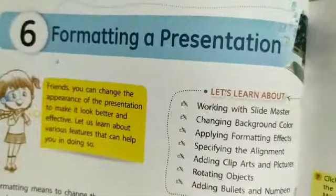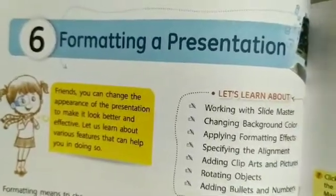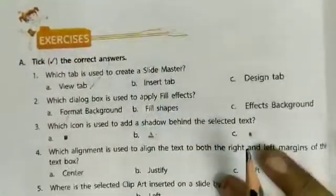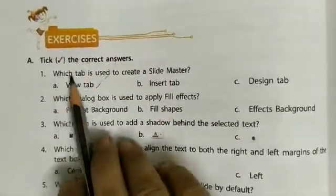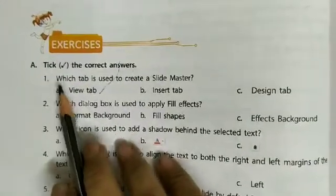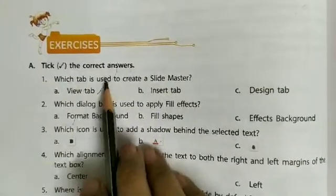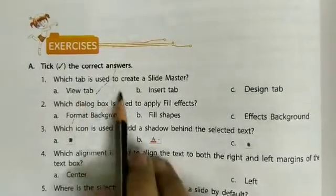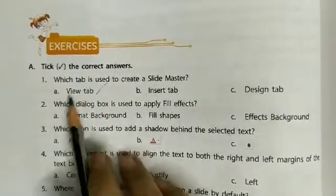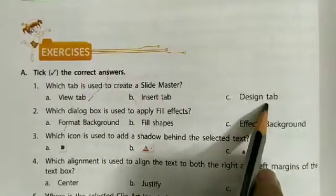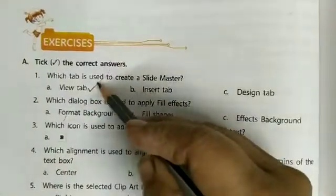Lesson number six: Formatting a Presentation. Today we will do exercises of this chapter. The first exercise is to find the correct answers. Number one: which tab is used to create a slide master? The three options are: A) View tab, B) Insert tab, C) Design tab. The correct answer is View tab. Put a tick mark here — the View tab is used to create a slide master.